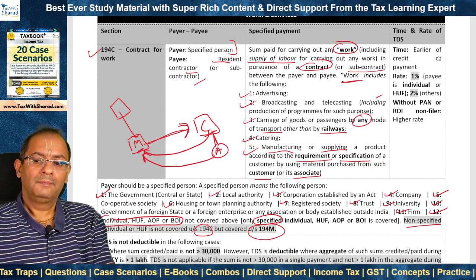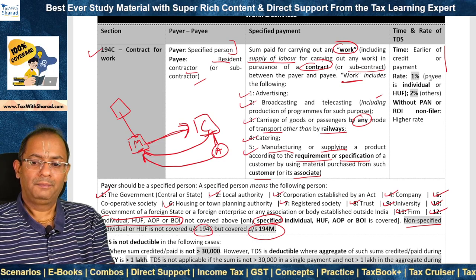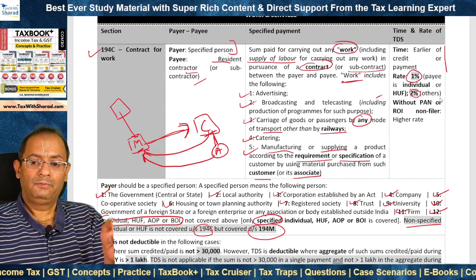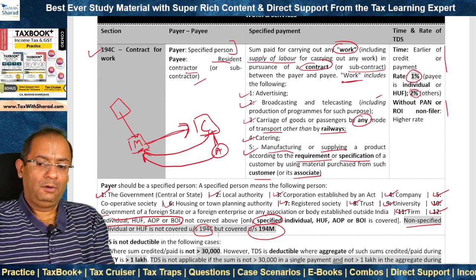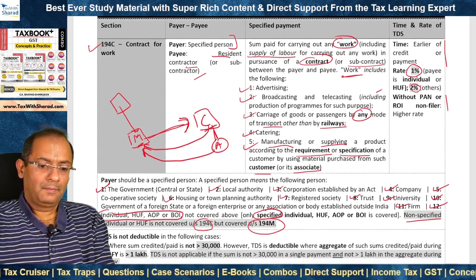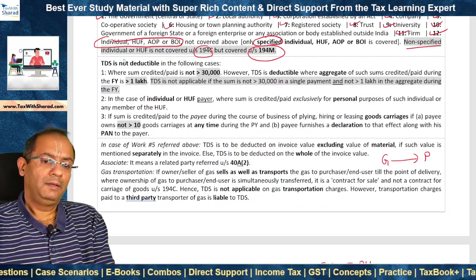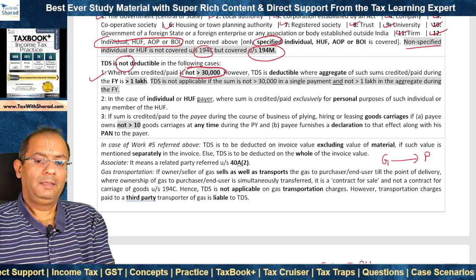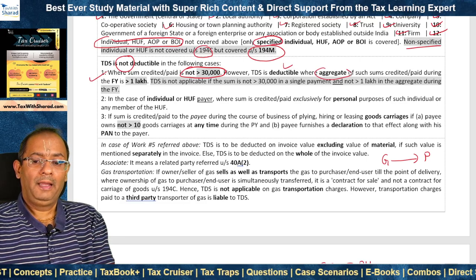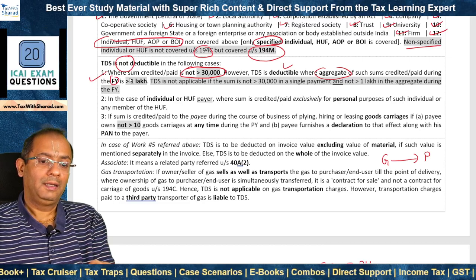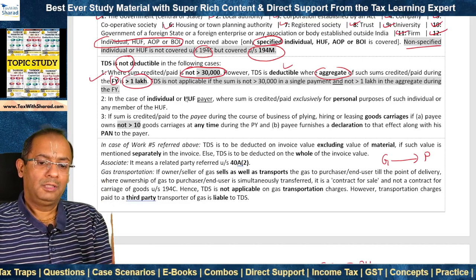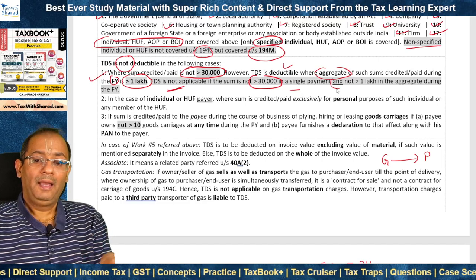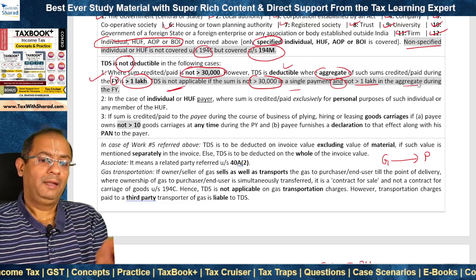TDS under section 194C is deductible at the time of the earlier of credit or payment. The rate is 1% where the payee is an individual or HUF, and 2% in case of others. A higher rate applies for without-PAN or ROI non-filer cases. TDS is not deductible where the sum credited or paid is not more than Rs. 30,000, but TDS is deductible where the aggregate of such sums credited or paid during the financial year is more than Rs. 1 lakh. In effect, TDS does not apply if a single payment does not exceed Rs. 30,000 and the aggregate during the financial year does not exceed Rs. 1 lakh.